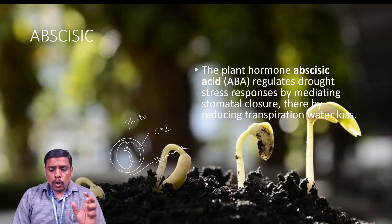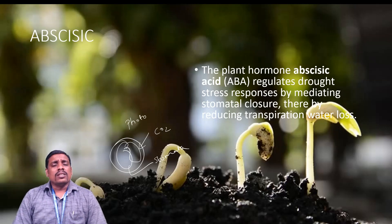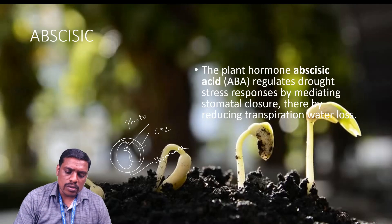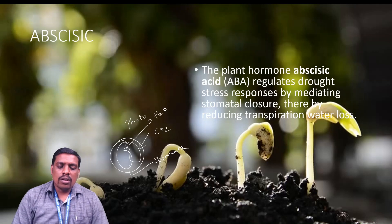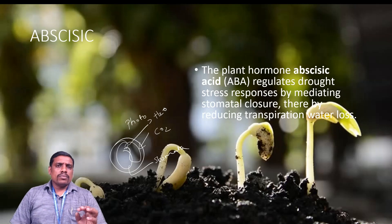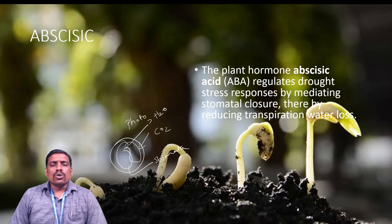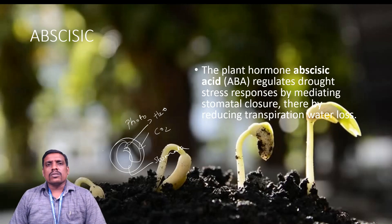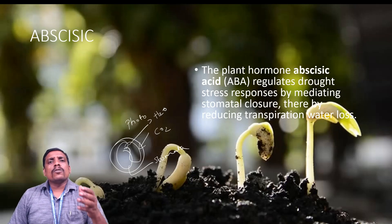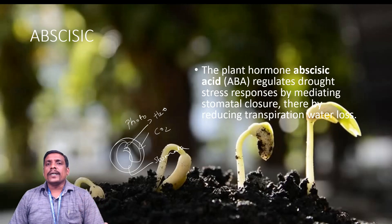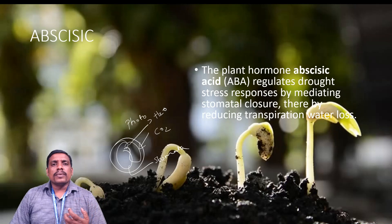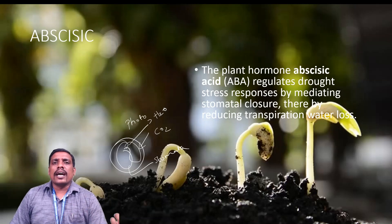For stomatal closure and reducing transpiration water loss, abscisic acid plays an important role. If stomata close, the process of transpiration or water loss from the plant leaves will be stopped. Inducing this transpiration process is beneficial to plant growth and development because plants can store their water for a longer period of time when there is no transpiration, meaning when the stomata are closed. In desert plants, this kind of mechanism is common, and stimulation of abscisic acid is much higher compared with perennial and aquatic plants.